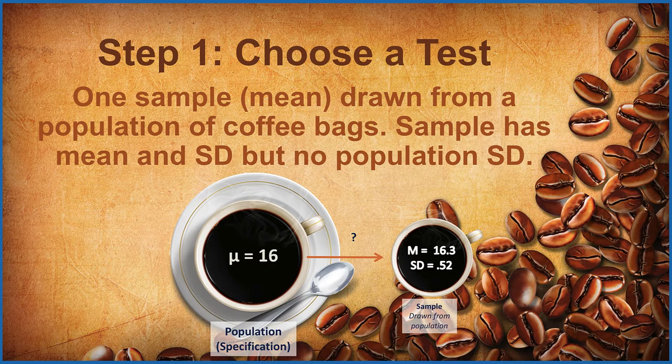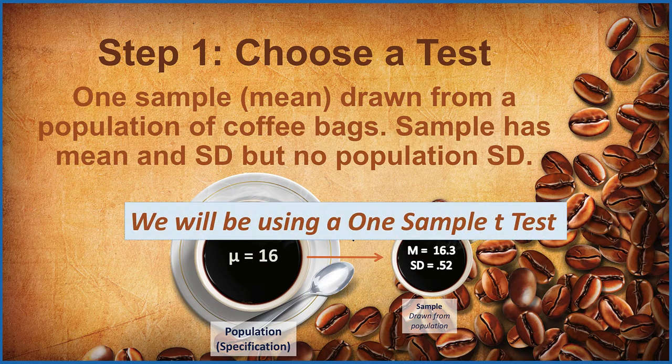The coffee bags have been drawn from a population of all of the coffee bags that are being produced at this time. Our sample has a mean and a standard deviation, but our population does not have a standard deviation, only the mean of 16. This is the setup for which we would use a one sample t-test.